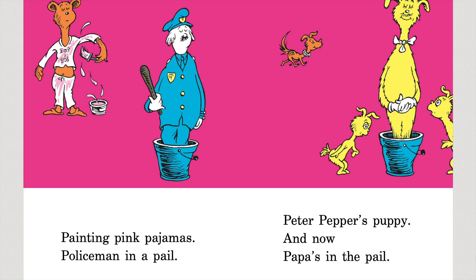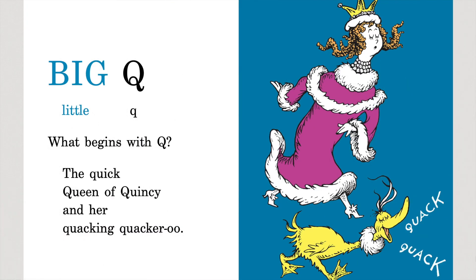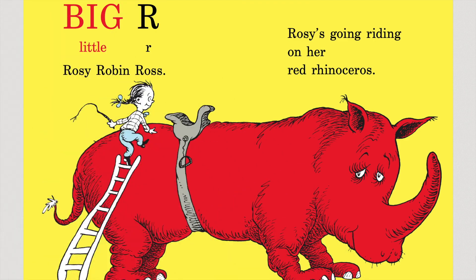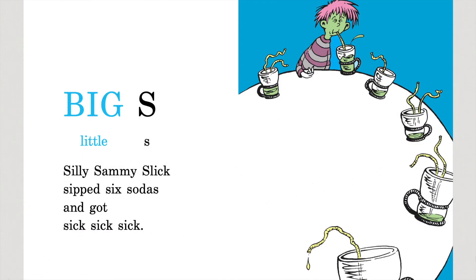Painting pink pajamas, policeman in a pail. Peter Pepper's puppy, and now Papa's in the pail. Big Q, little Q — what begins with Q? The quick queen of Quincy and her quacking quackaroo. Big R, little R — Rosie Robin Ross. Rosie's going riding on her red rhinoceros. Big S, little S — silly Sammy Slick. Sipped six sodas and got sick, sick, sick.